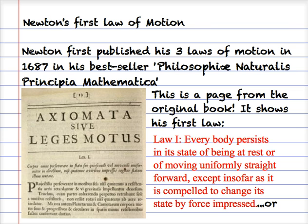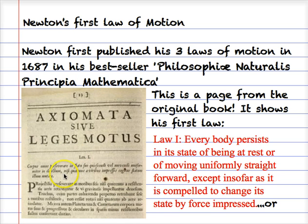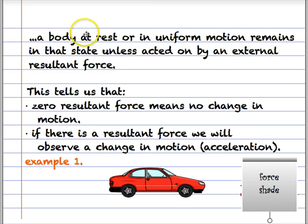Let's look at Newton's laws of motion. He first published his three laws in 1687 in the Philosophiae Naturalis Principia Mathematica. This is an actual page from the first edition showing the first law, which states: every body persists in its state of being at rest or of moving uniformly straight forwards, except in so far as it is compelled to change its state by force impressed. In other words, a body at rest or in uniform motion remains in that state unless acted on by an external resultant force. Zero resultant force means no change in motion; a non-zero resultant force means a change in motion or acceleration.